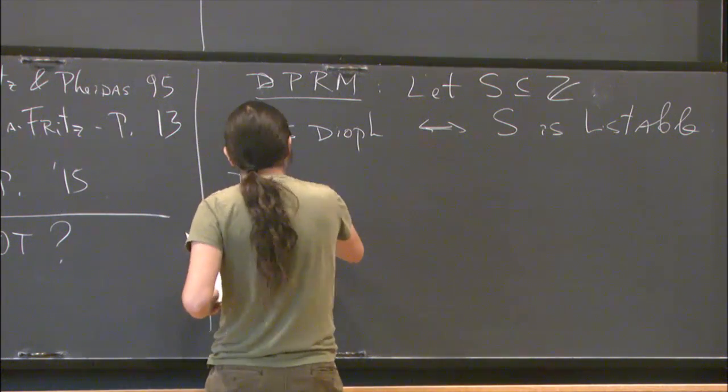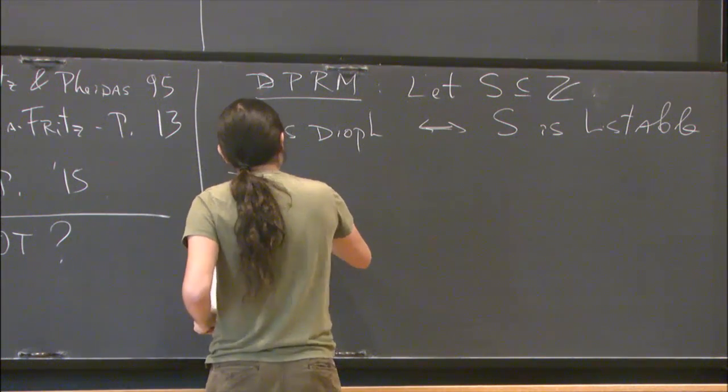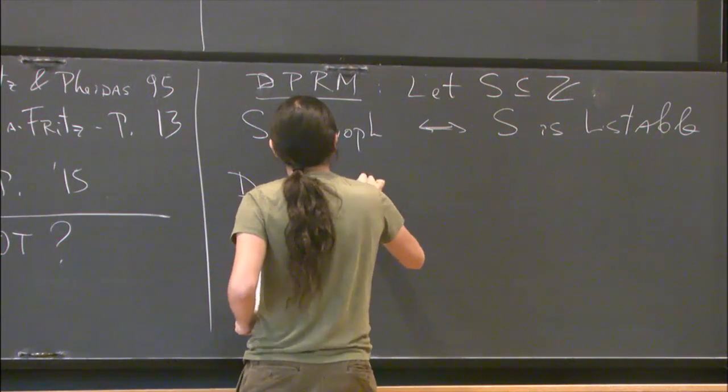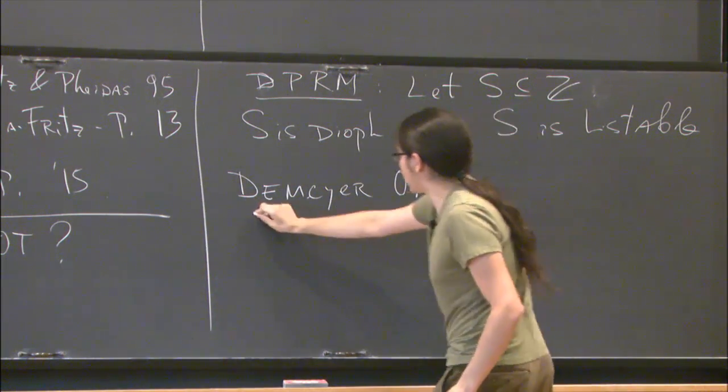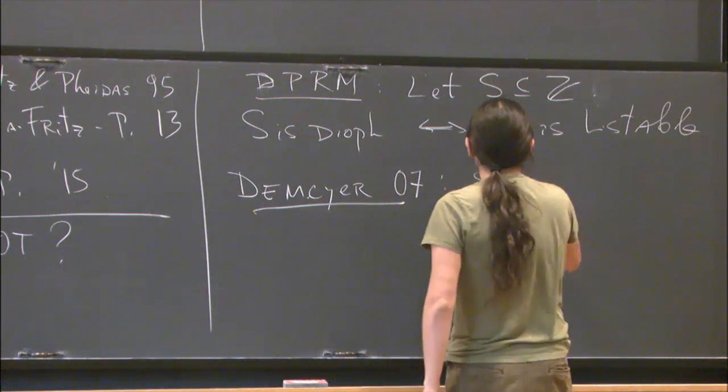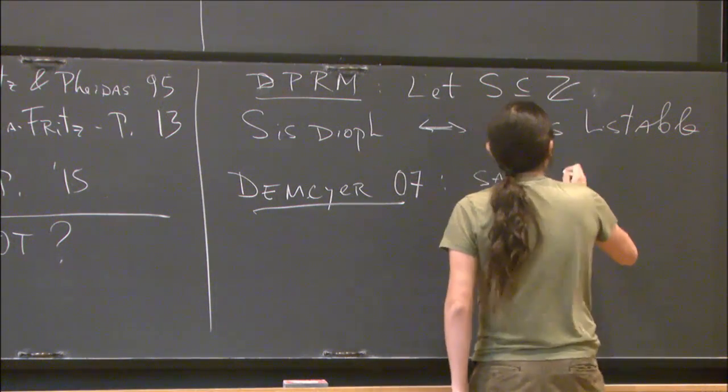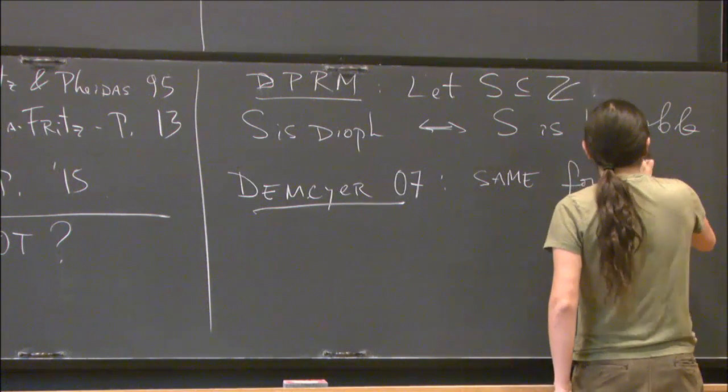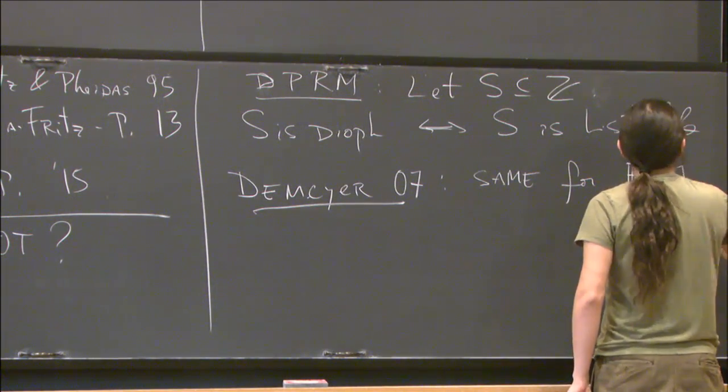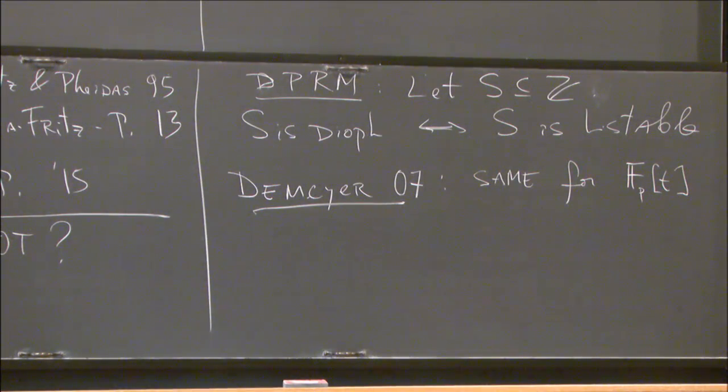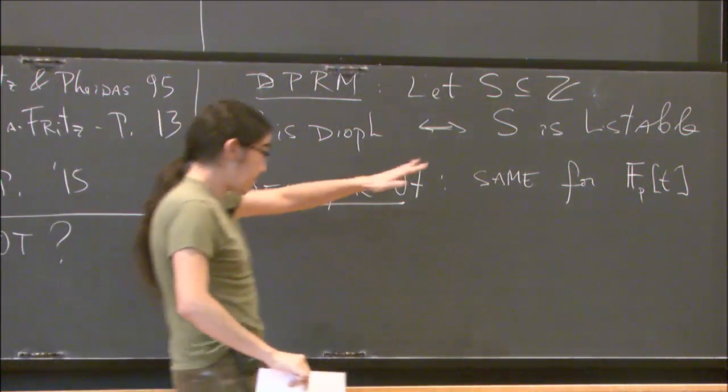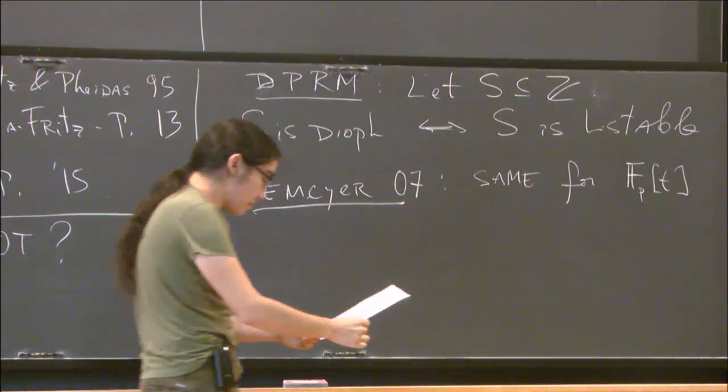For instance, I don't want to make a survey, but this is quite relevant. Van den Dries and Demeyer, in 2007, in his thesis, showed the same for polynomial rings over finite fields, which I'm just going to write Fp[t]. So this is a theorem. And of course, listable sets make sense here because this is a recursive ring.